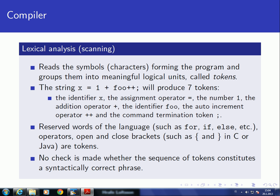Looking in more detail at the individual phases of the compiler, we start with the lexical analysis component, often called scanning. The purpose is to read the symbols of our source program and group them into meaningful units called tokens. For example, the string x = 1 + foo++ ; will produce seven tokens: the identifier x, the assignment operator, the number 1, the addition operator plus, the identifier foo, the auto-increment operator ++, and the semicolon.